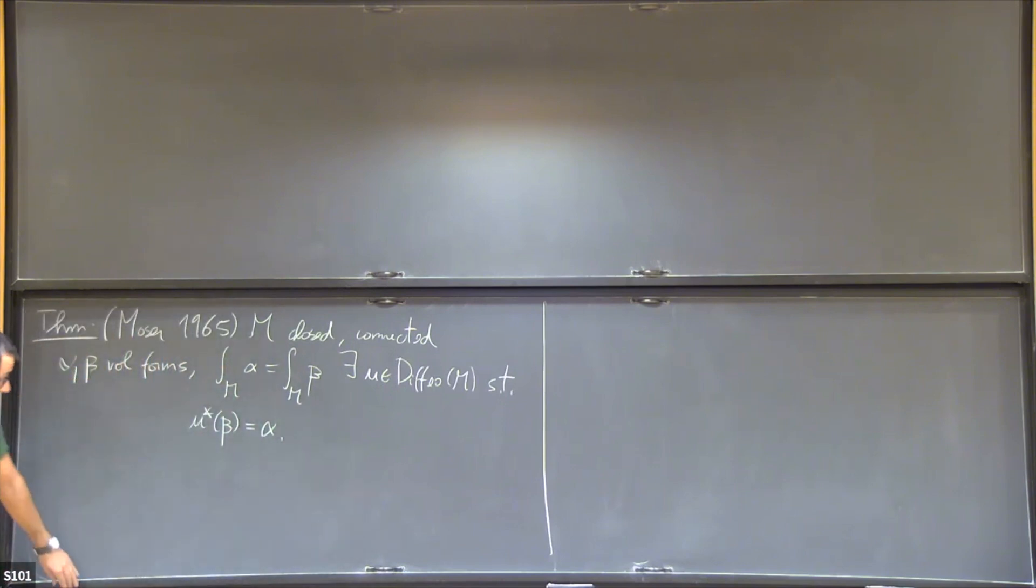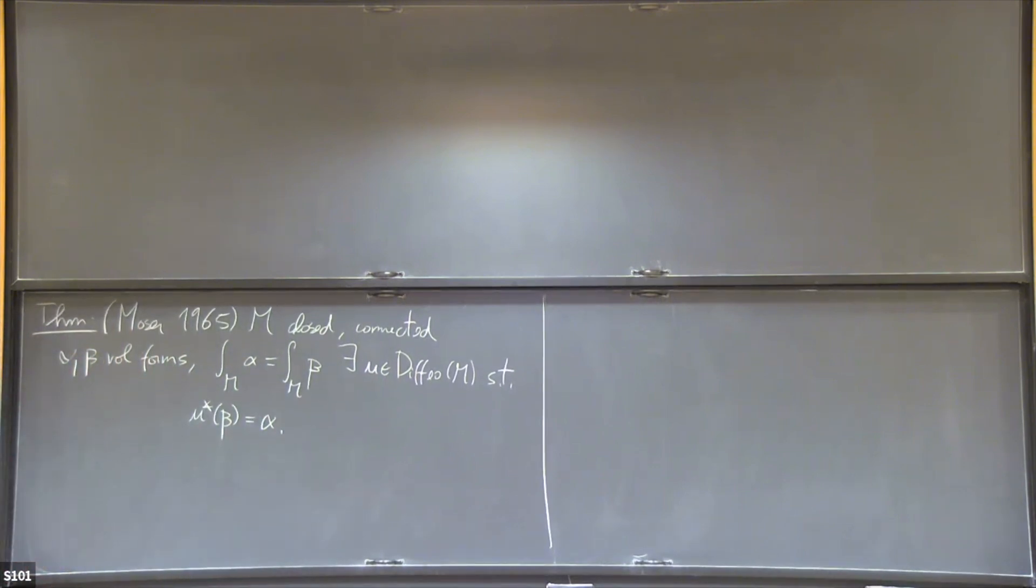So what does the theorem tell us? This theorem tells us that if you are looking at smooth volume forms over a manifold, their only global invariant is their volume. Any two volume forms with the same volume are equivalent to a diffeomorphism. And of course, this is a necessary condition for you to be able to solve this equation.